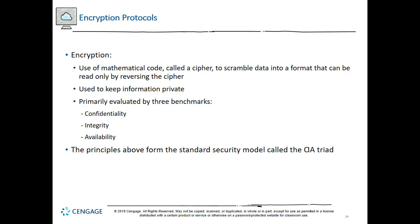Encryption is the last means of defense against data theft. So if an intruder has bypassed all other methods of security — including physical security, such as breaking into a data center, or network design security like defeating firewalls, packet filtering techniques, or removing encapsulated frames — data may still be safe if it is encrypted. Encryption protocols use a mathematical code called a cipher to scramble data into a format that can be read only by reversing the cipher — that is, by deciphering or decrypting the data.